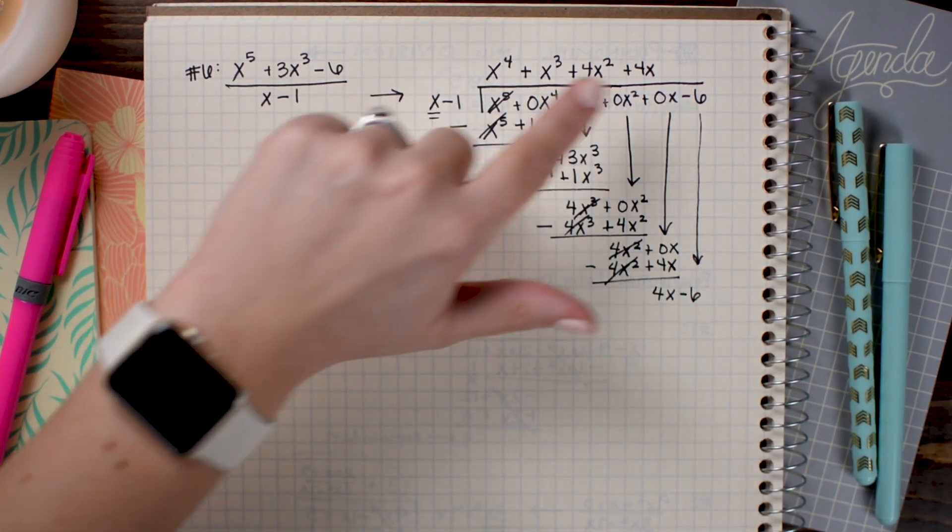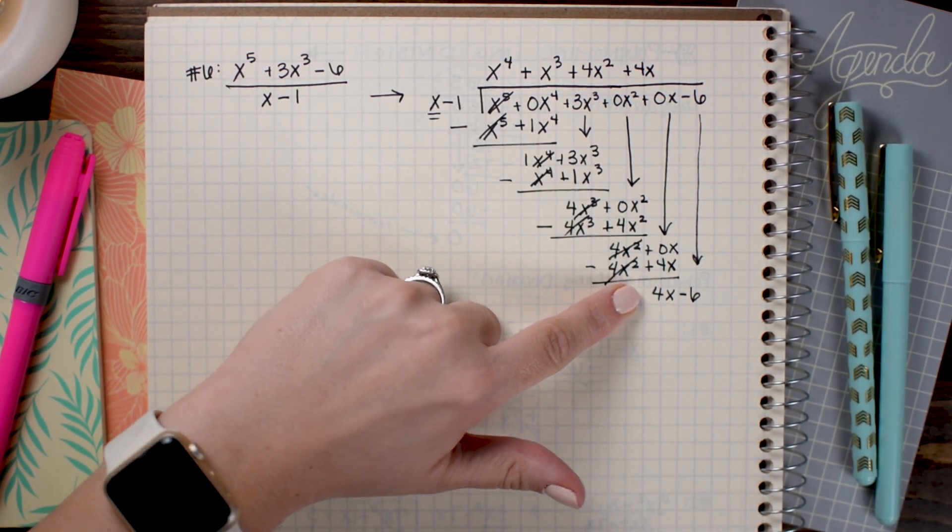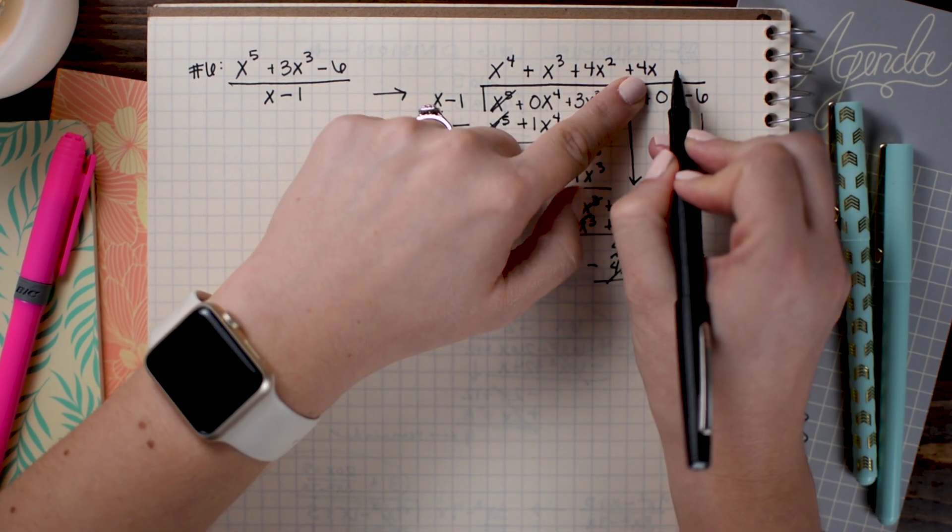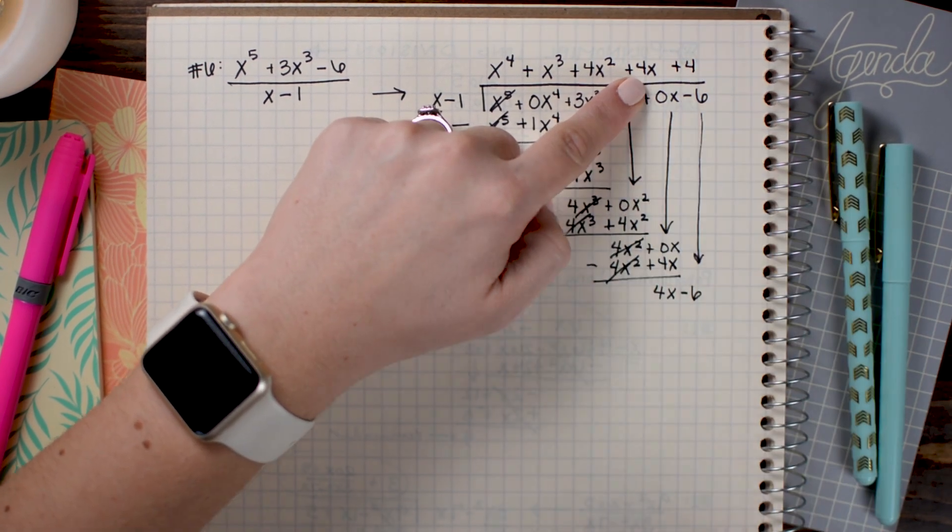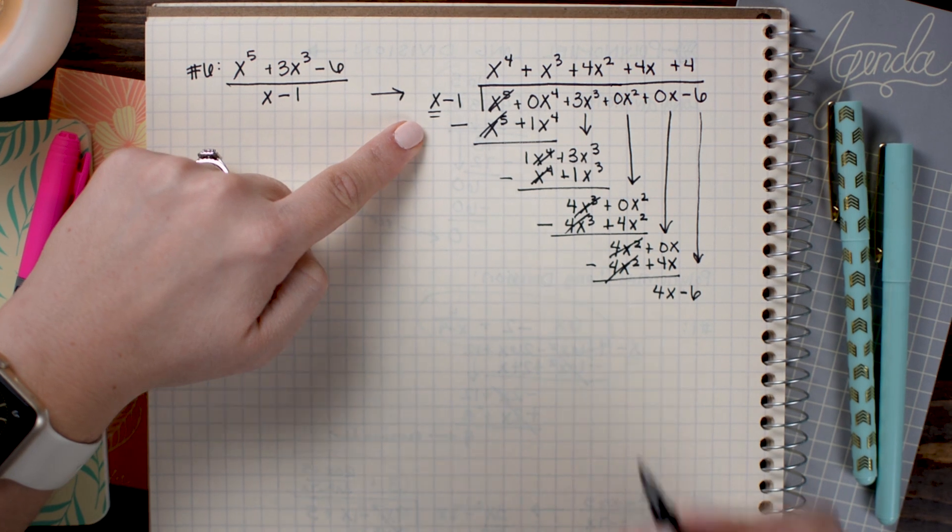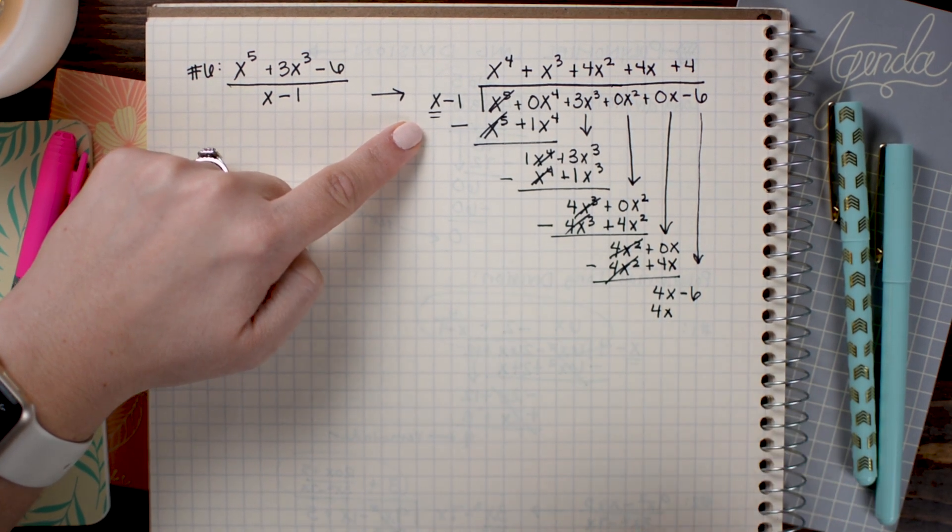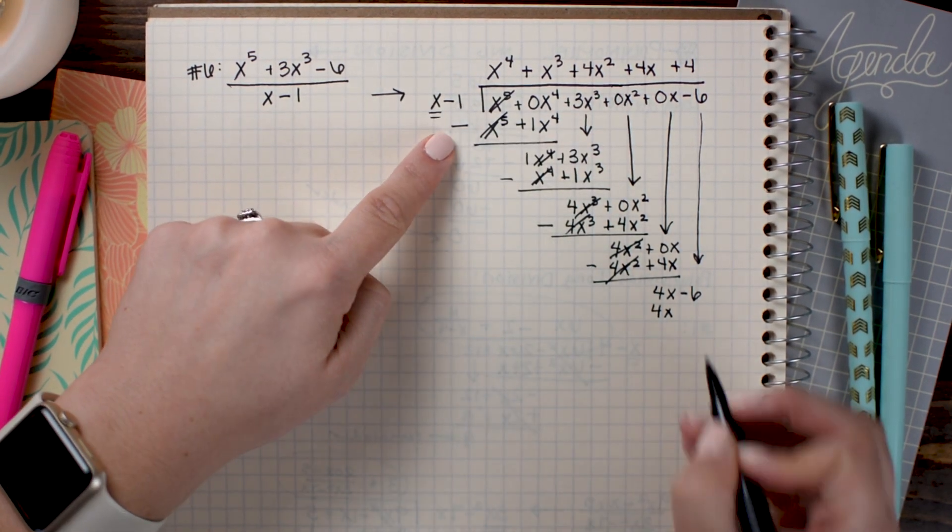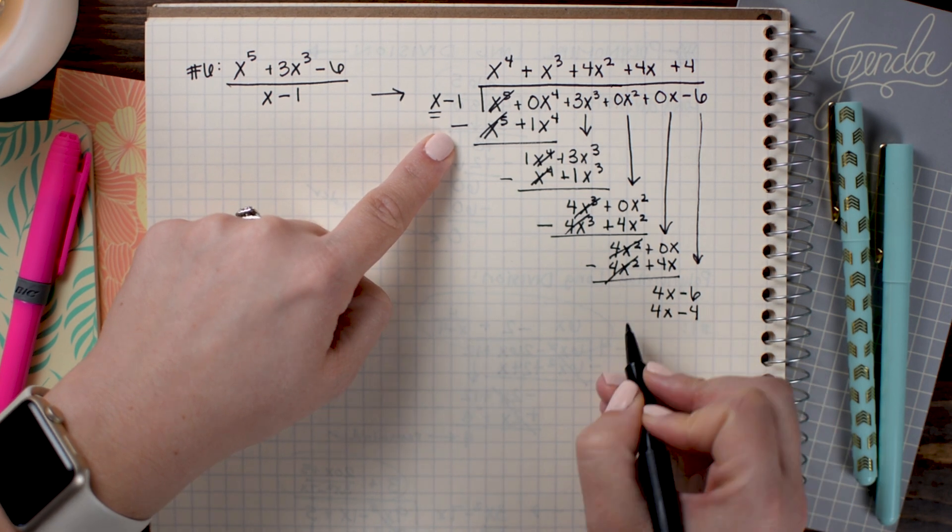And I say x times what gives me 4x. I need a positive 4 here. So 4 times x is 4x. And 4 times -1 is -4. And subtract.